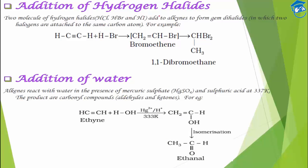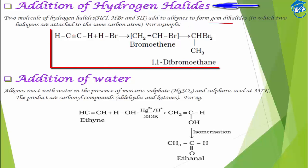Next is addition of hydrogen halides — HCl, HBr, and HI. When two moles are added, gem dihalides are produced, meaning both halide atoms attach to the same carbon atom. First, one H adds to one carbon and Br adds to the next carbon; then another H and Br add, giving dibromoethane.